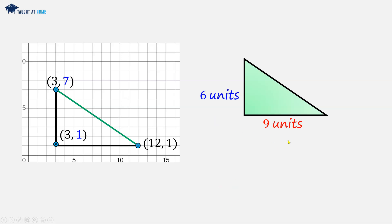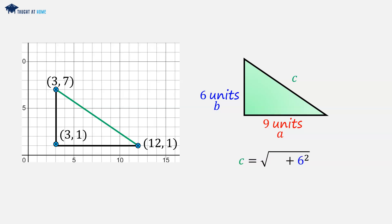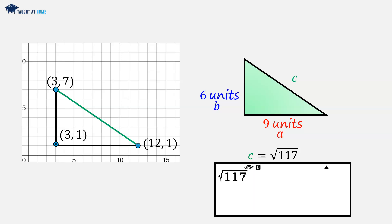And now we can label these a, b and c, and we can use our Pythagoras theorem formula. C is equal to the square root of a squared plus b squared. Substituting our a and b — so a is 9 and b is 6. 9 squared is 81, 6 squared is 36. 81 plus 36 is 117. Using our calculator, we take the square root of 117, which gives us 10.8166. Rounding this to two decimal places, we get 10.82 units.